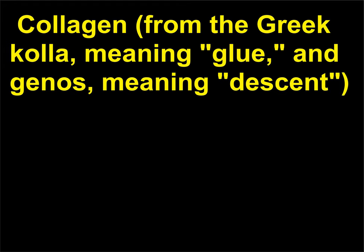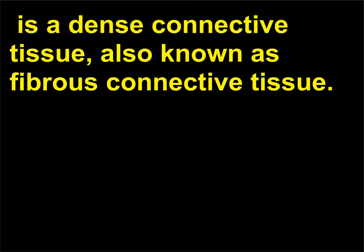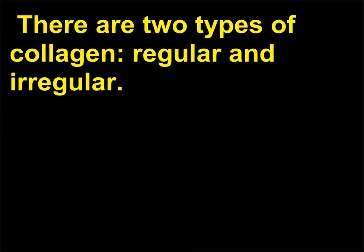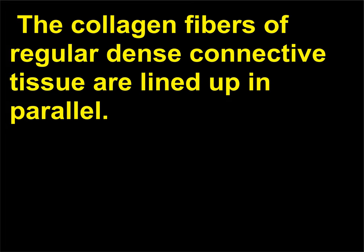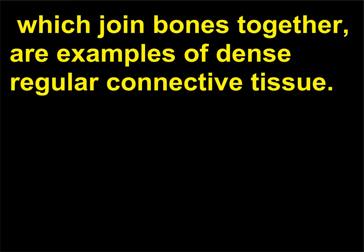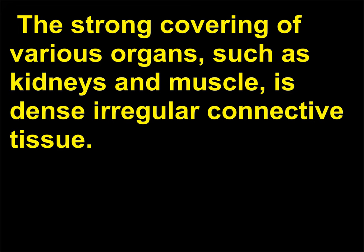Collagen — from the Greek kola, meaning glue, and genos, meaning descent — is a dense connective tissue, also known as fibrous connective tissue. It has a matrix of densely packed collagen fibers. There are two types of collagen: regular and irregular. The collagen fibers of regular dense connective tissue are lined up in parallel. Tendons, which bind muscle to bone, and ligaments, which join bones together, are examples of dense regular connective tissue. The strong covering of various organs, such as kidneys and muscle, is dense irregular connective tissue.